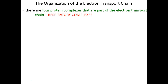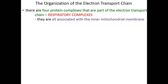There are four protein complexes that are part of the electron transport chain, referred to as respiratory complexes simply because they're part of respiration. All of them are associated with the inner mitochondrial membrane, so the electron transport chain itself occurs in or at that inner mitochondrial membrane. Each of these complexes are multi-enzyme systems, meaning there are many different enzymes working to catalyze different redox reactions in each complex.